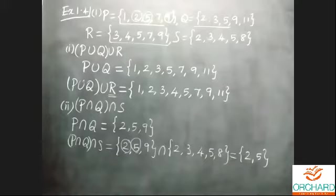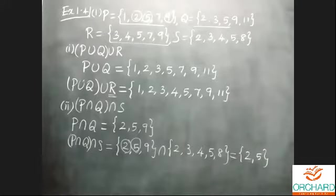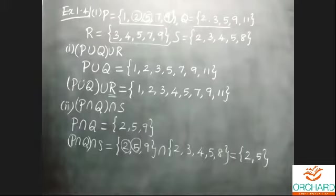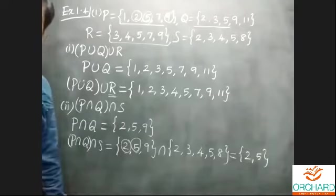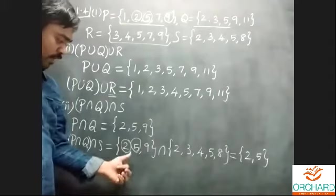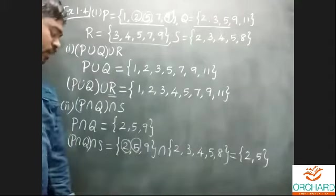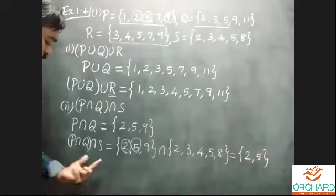Copy these two subdivisions — exercise number 1.4, first two subdivisions complete. This is the application of union and intersection of three sets. You can identify p intersection q intersection s by encircling the common elements; only 2 and 5 are common between set p intersection q and set s.